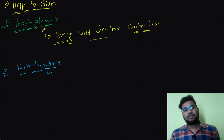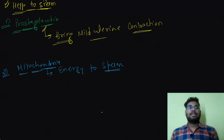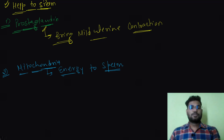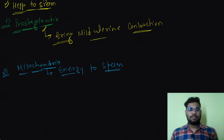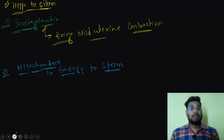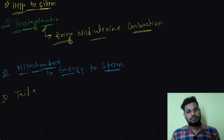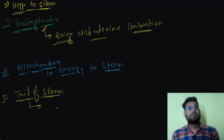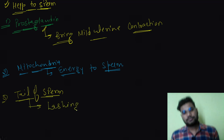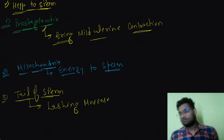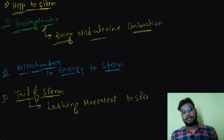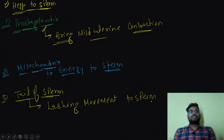The mitochondria of the sperm provide energy to the sperm — that is something very important. Another factor is the tail of the sperm. The sperm has a well-developed tail, and the tail of the sperm helps provide lashing movements to the sperm. These are some of the factors which help sperm to move.